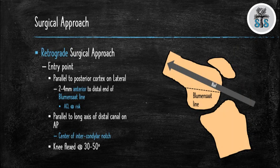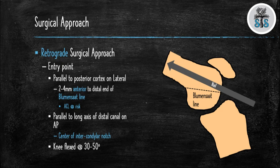When placing a retrograde nail, you should be 2 to 4 mm anterior to Blumensaat's line, with the nail parallel to the posterior cortex on the lateral x-ray. If you place the nail posterior to Blumensaat's line, you risk damaging the ACL. On the AP x-ray at the knee, aim for the center of the intercondylar notch. Flex the knee 30 to 50 degrees to open up the space and elevate the patella. The nail should be placed 2 to 5 mm beyond the articular cartilage. The illustration on the right highlights proper retrograde nail placement: anterior to Blumensaat's line, parallel to the posterior cortex, and centered in the femur.